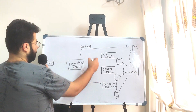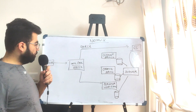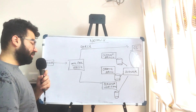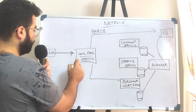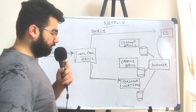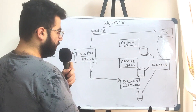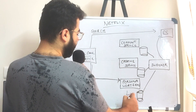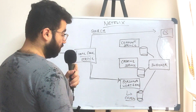Continuing with the example of Netflix, the first thing which happens when you go on the home page is that your personalized recommendations are loaded. When you make a call to the home page service, it will internally make a call to a personalization service. This personalization service has a database which stores data according to your customer ID, and according to this your recommendations are loaded.